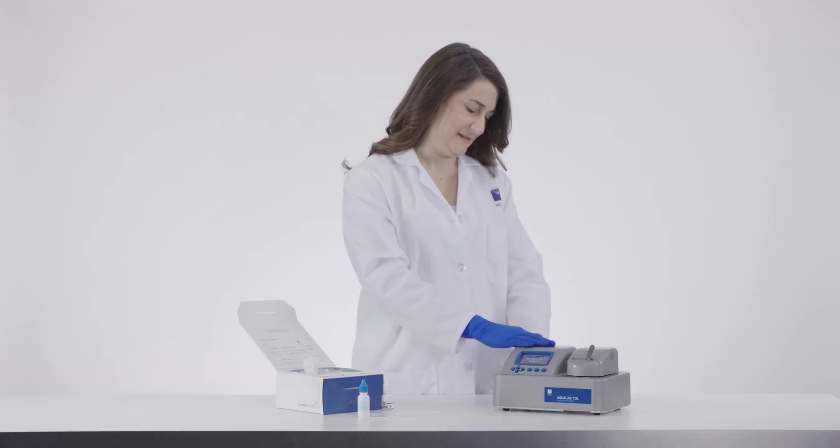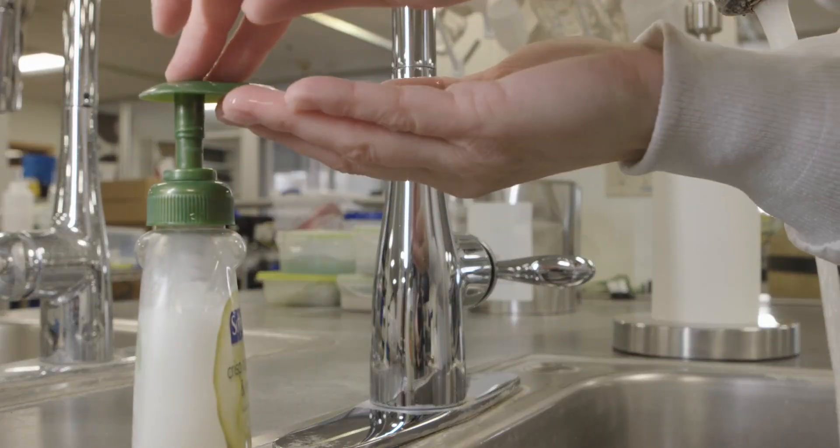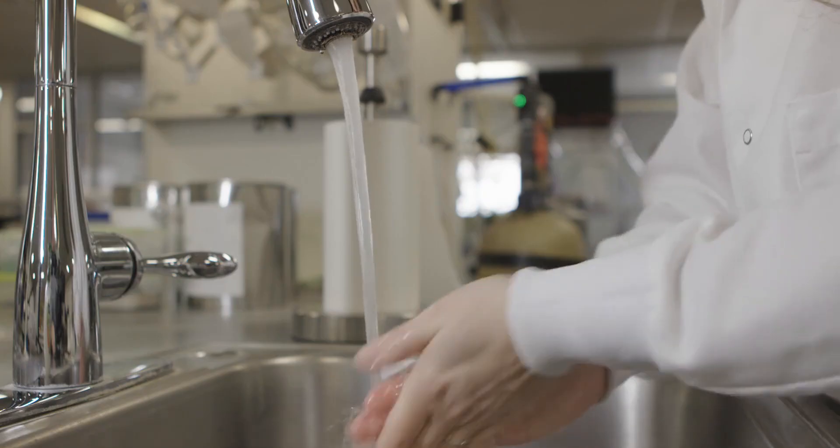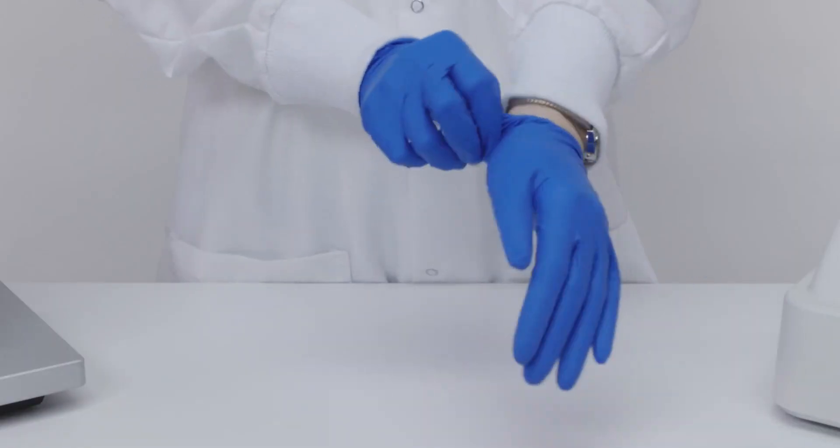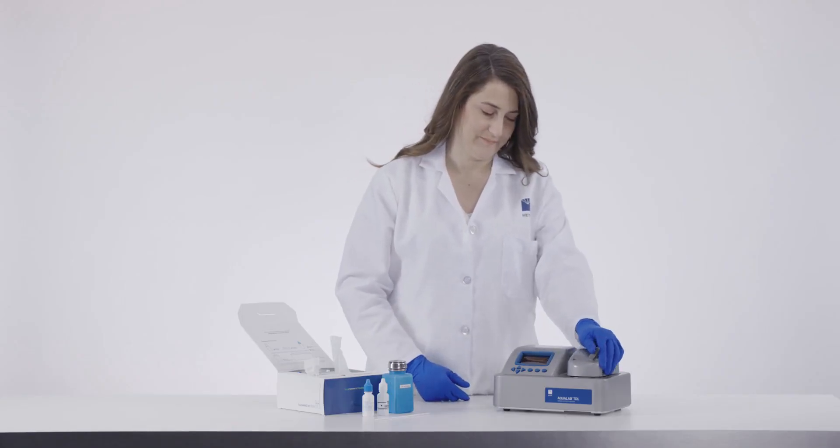To start, turn off the TDL and unplug the power cord. Wash your hands thoroughly or wear lab gloves so dirt and natural oils on your hands don't contaminate the cleaning materials or the sensors. Open the lid to the sample chamber.